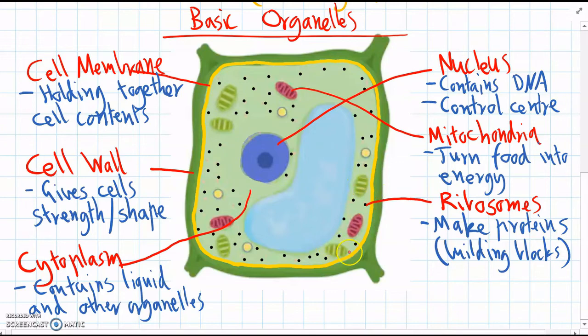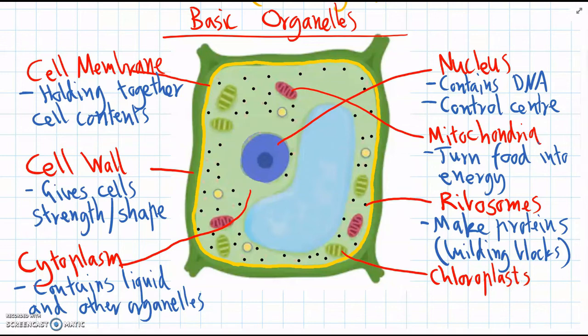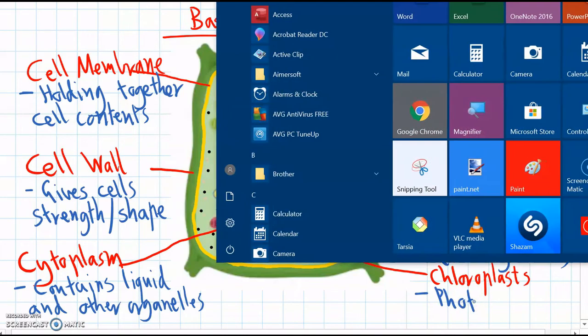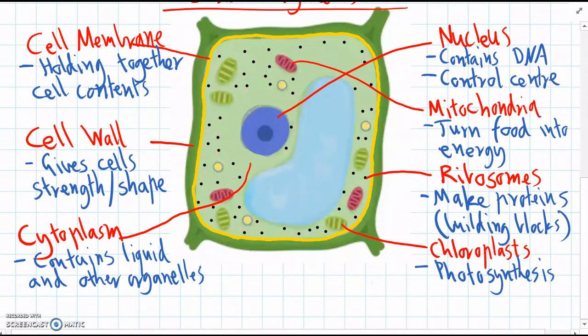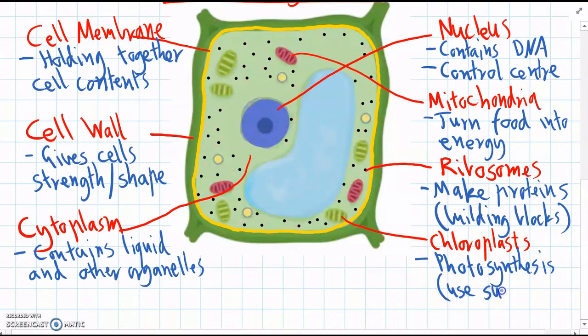The next one are these other jelly bean shaped organelles, but these green ones here are called chloroplasts. And these are only found in plant cells. And this is why plants are green. And it's where photosynthesis happens. So they use sunlight to make sugars, or they use sunlight to make food in other words. And that's why plants don't need to eat, because they have chloroplasts in their cells.